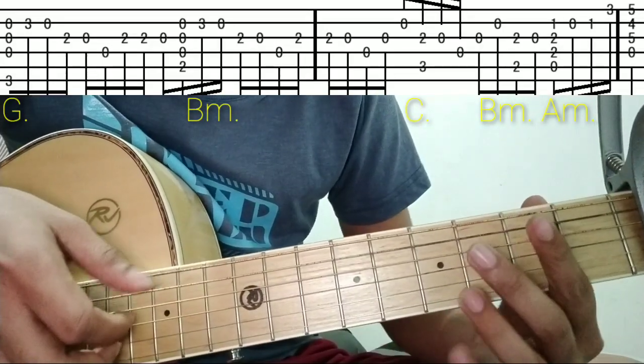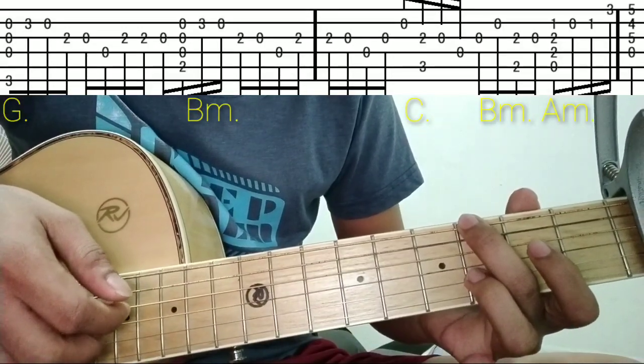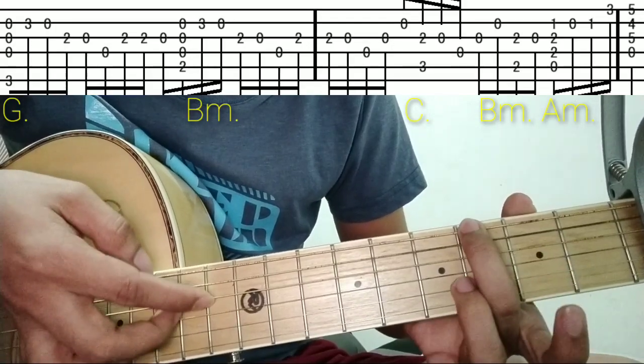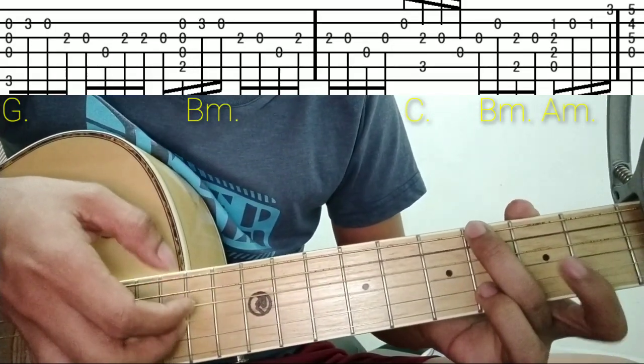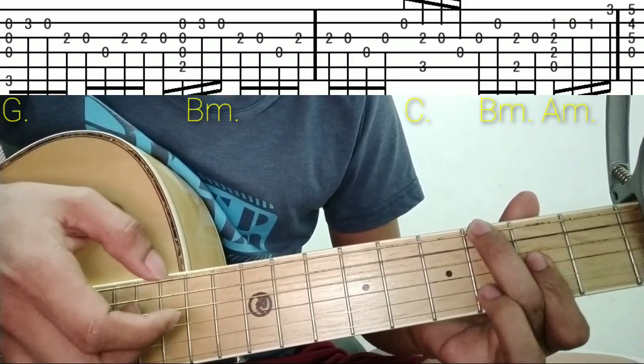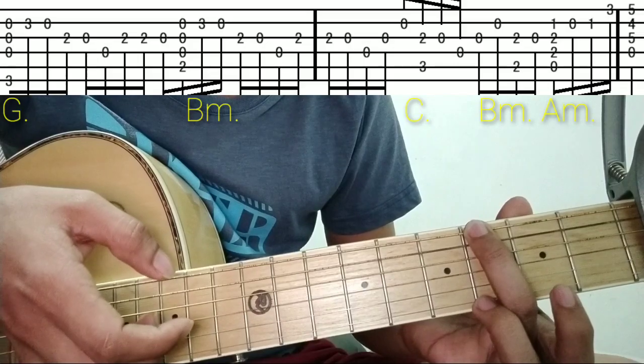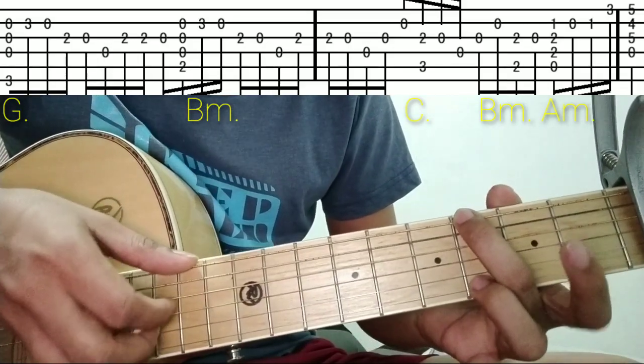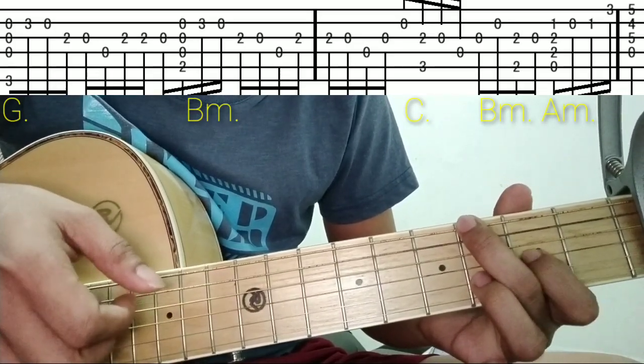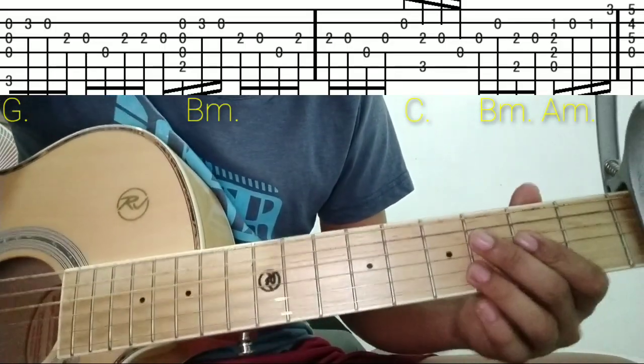Then you'll pluck this open string, the fourth string. Every time you pluck, hammer on, then open. That's it for the G chord. Let's move on to the next chord, B minor. It's similar to that one.